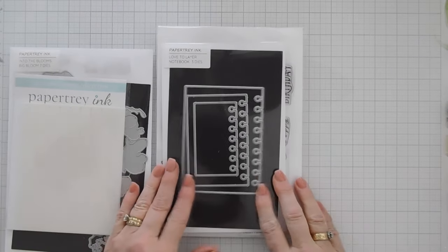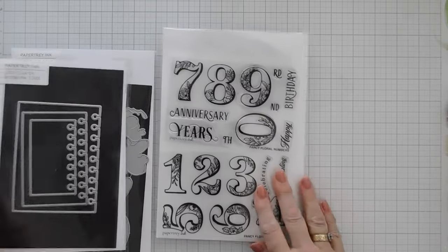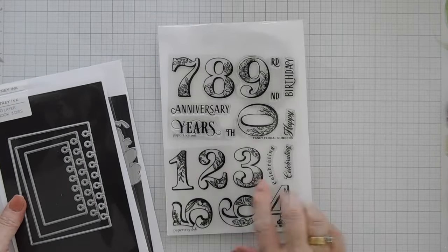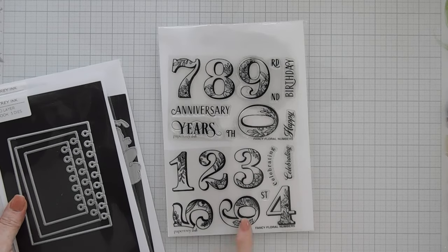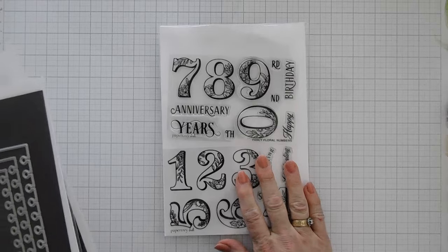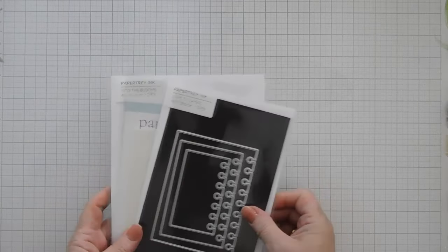I'm also going to bring in the Love to Layer Notebook die and then for my background we're going to fill it with some numbers. So this is the birthday card. This is the Paper Tray Ink Fancy Floral Numbers. This is not new, these are all part of the release but this has been in the shop for a while. We're going to start by doing some die cutting.